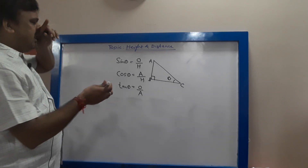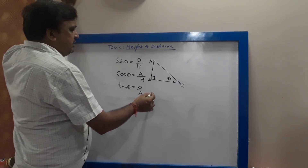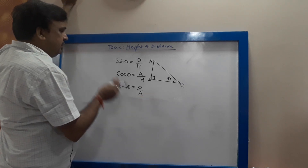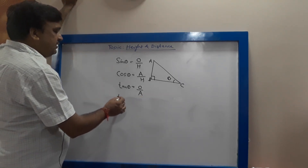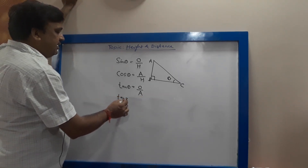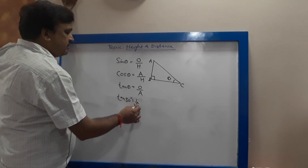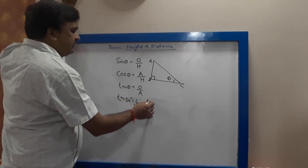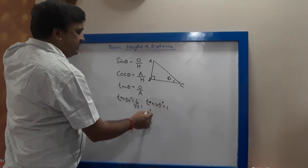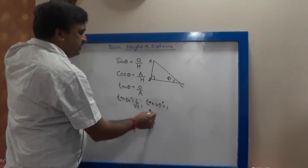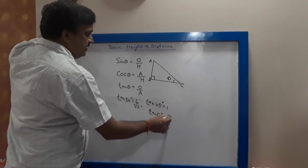You should also have knowledge of Trigonometric Ratios of standard angles. Tan 30 is 1 upon root 3. Tan 45 is 1. And Tan 60 is root 3.